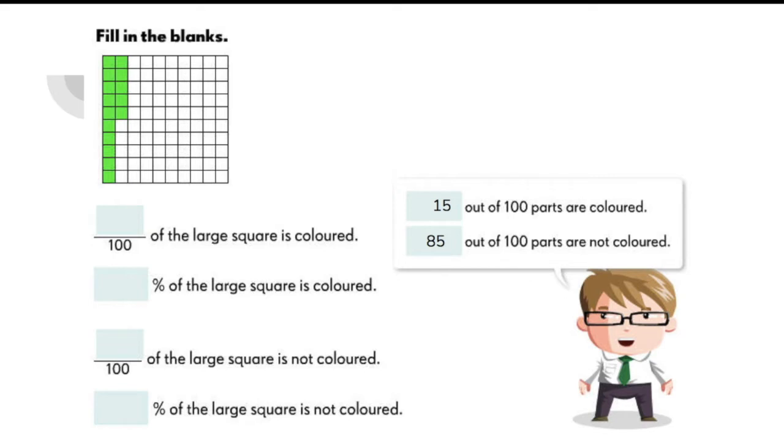Let's express this in terms of fraction. 15 over 100 of the large square is colored. And in terms of percent, this is equal to 15%. So we say 15% of the large square is colored.